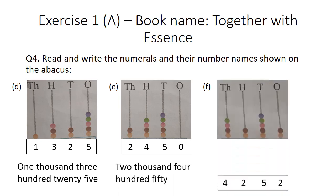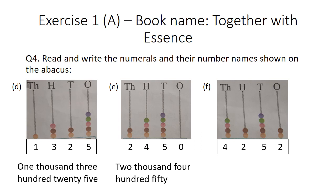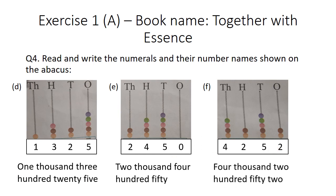Part F: at the ones place there are 2 beads. At the tens place there are 5 beads. At the hundreds place there are 2 beads. At the thousands place there are 4 beads. The number formed is 4252, and its number name is four thousand two hundred and fifty-two.